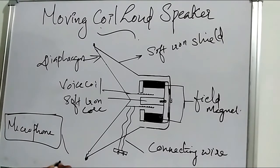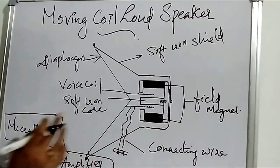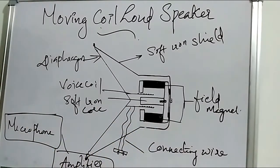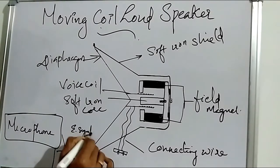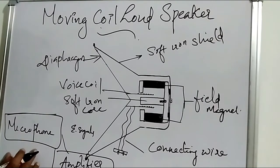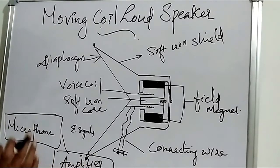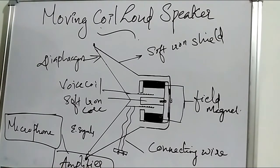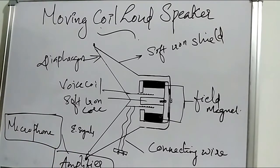The sound waves from the microphone go to the amplifier. The microphone emits electrical signals, and there are many variations in those signals. The amplifier's function is to enhance the amplitude of the electrical signals — the amplitude will increase.